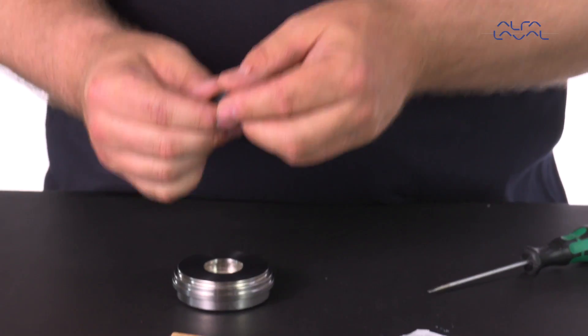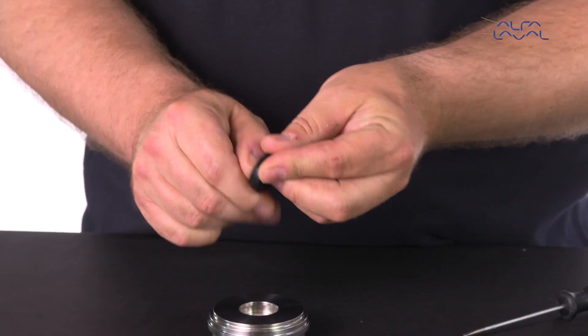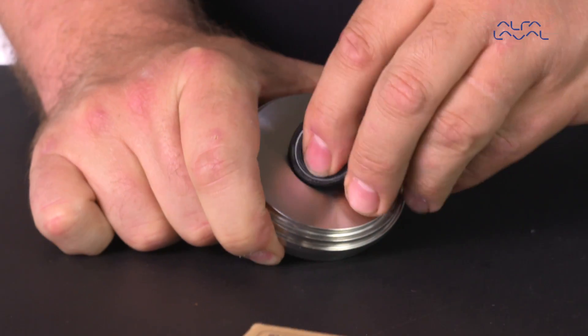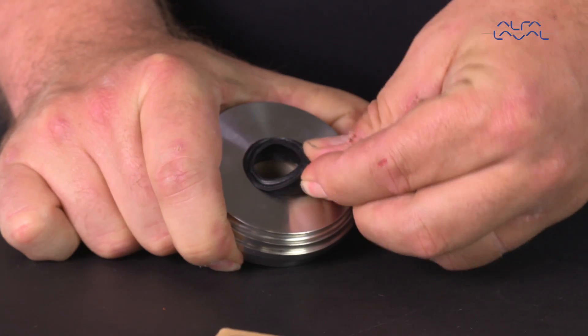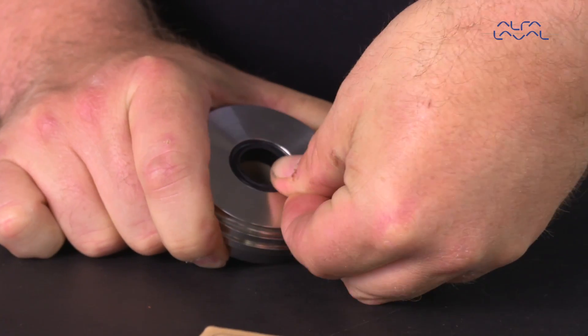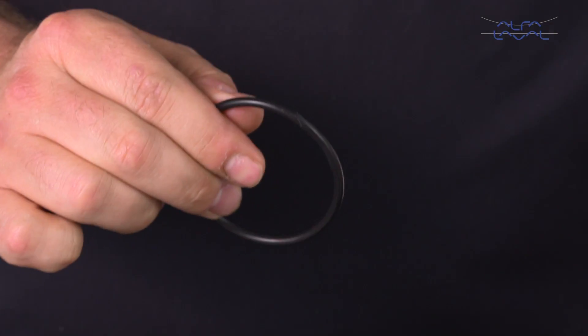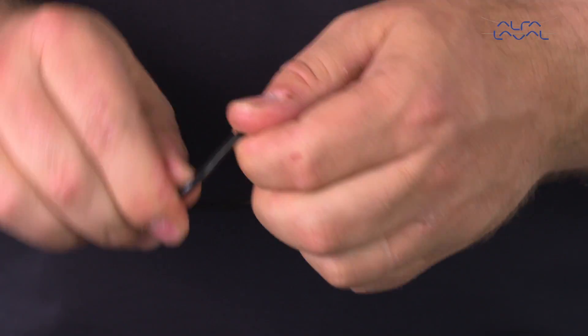Lubricate and mount the lip seal into the sealing element. Then lubricate and mount the body o-ring onto the sealing element.